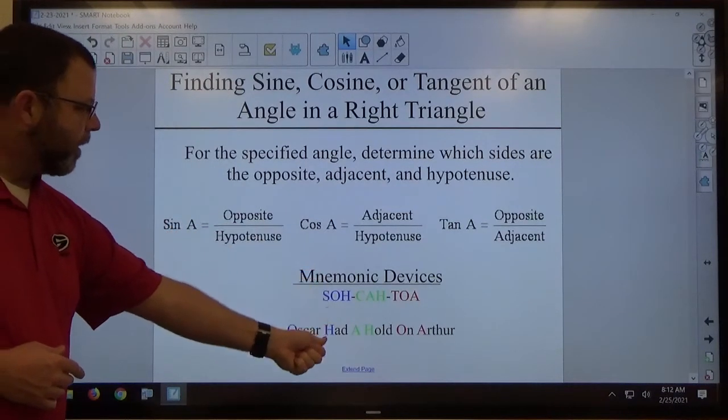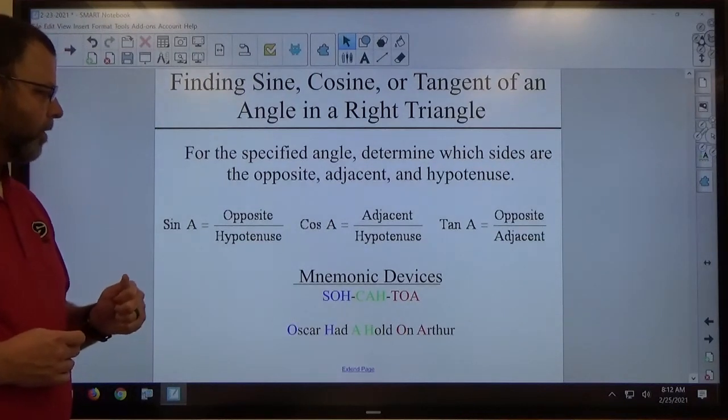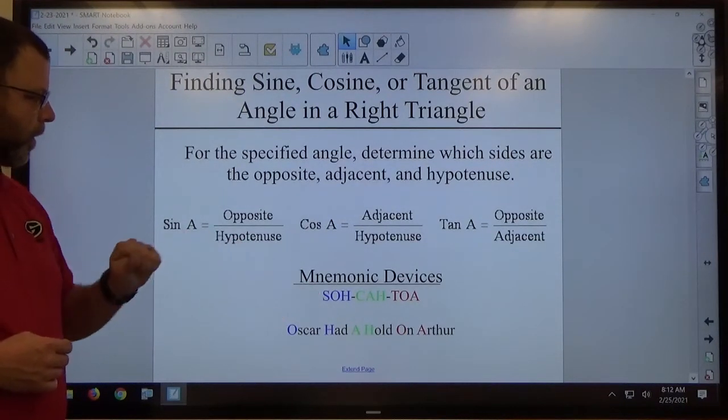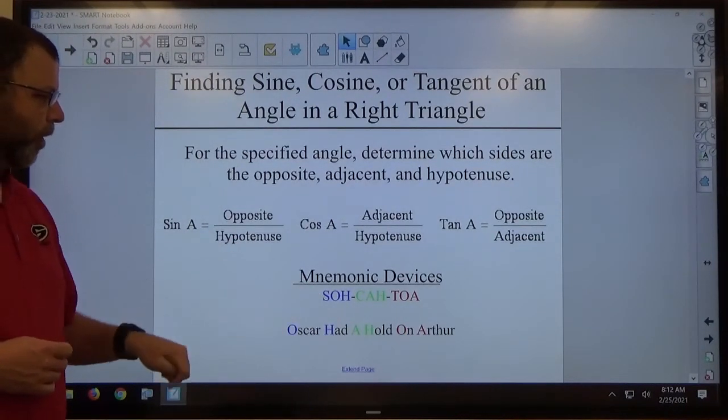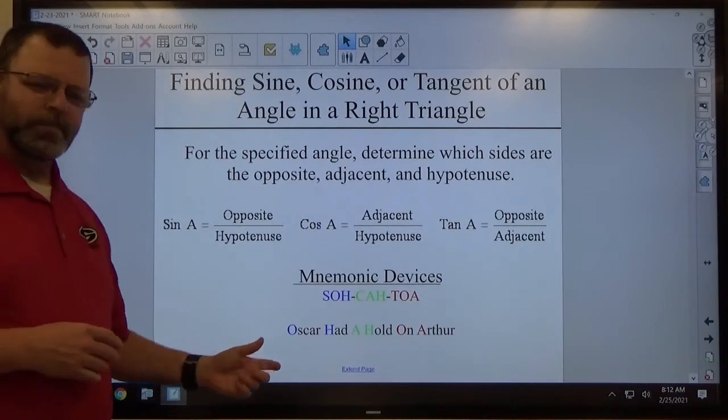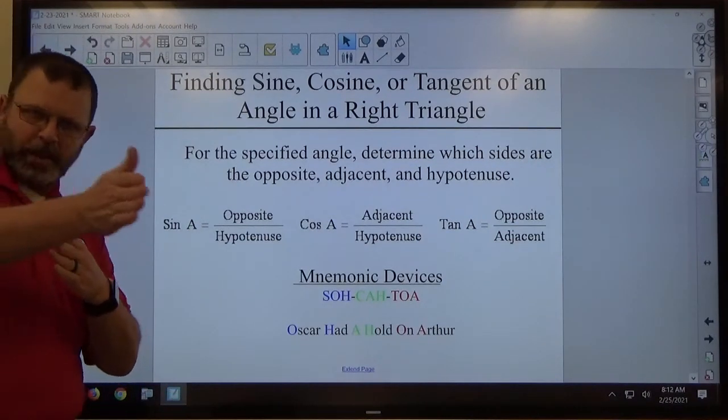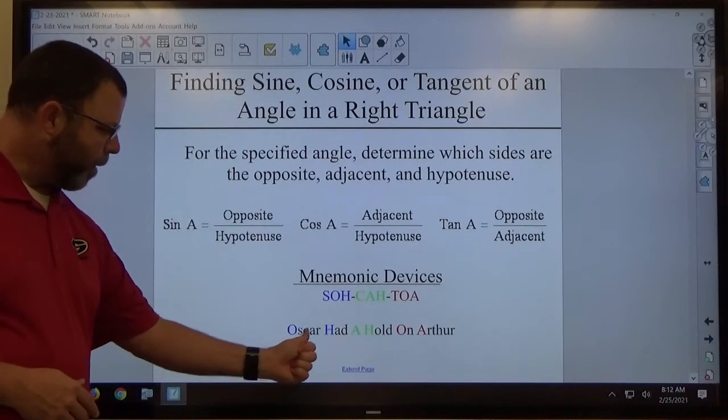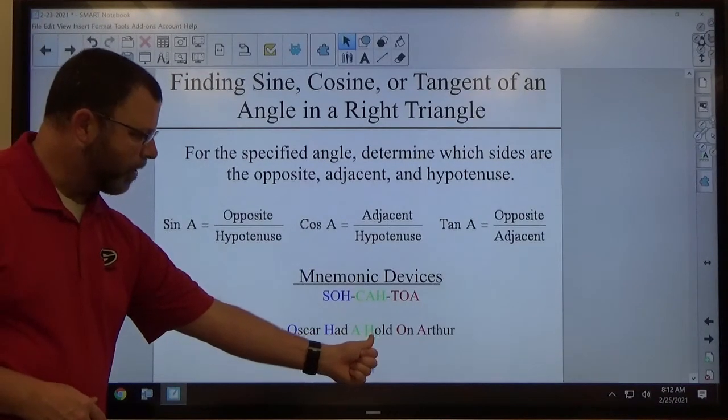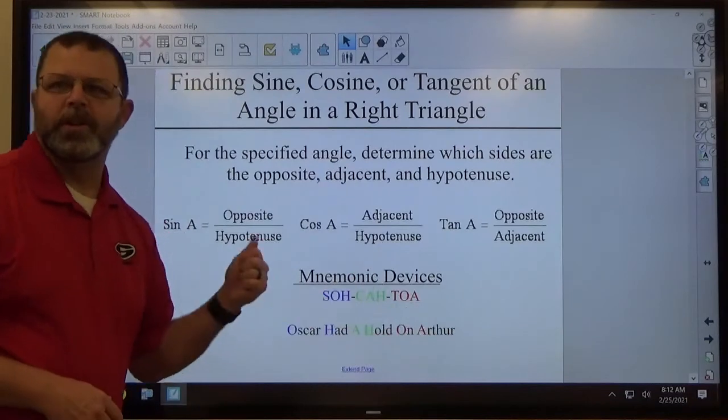The mnemonic devices I have here are just ways to memorize this. I usually go with SOH CAH TOA, but there's also Oscar Had A Hold On Arthur. So this is where most calculators have sine, cosine, tangent in that order. So sine opposite hypotenuse, cosine adjacent hypotenuse, tangent opposite adjacent.